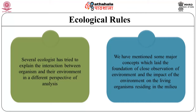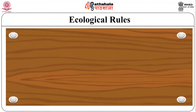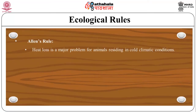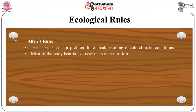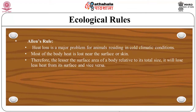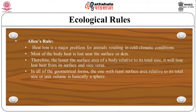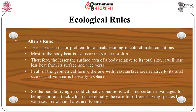The first ecological rule is Allen's Rule. Heat loss is a major problem for animals residing in cold climatic conditions. Most body heat is lost near the surface or skin. Therefore, the lesser the surface area of a body relative to its total size, the less heat it will lose from its surface, and vice versa. Of all geometrical forms, the one with the least surface area relative to its total size or unit volume is essentially a sphere.